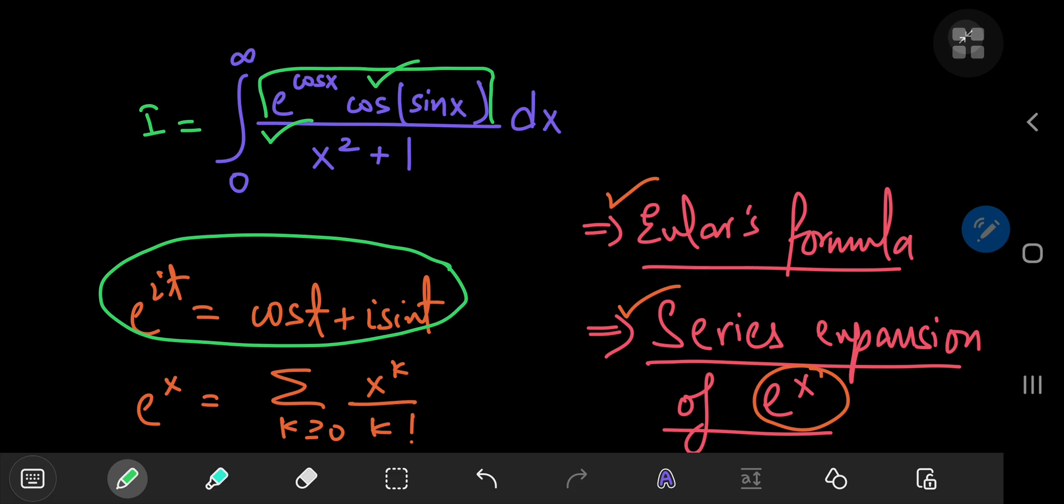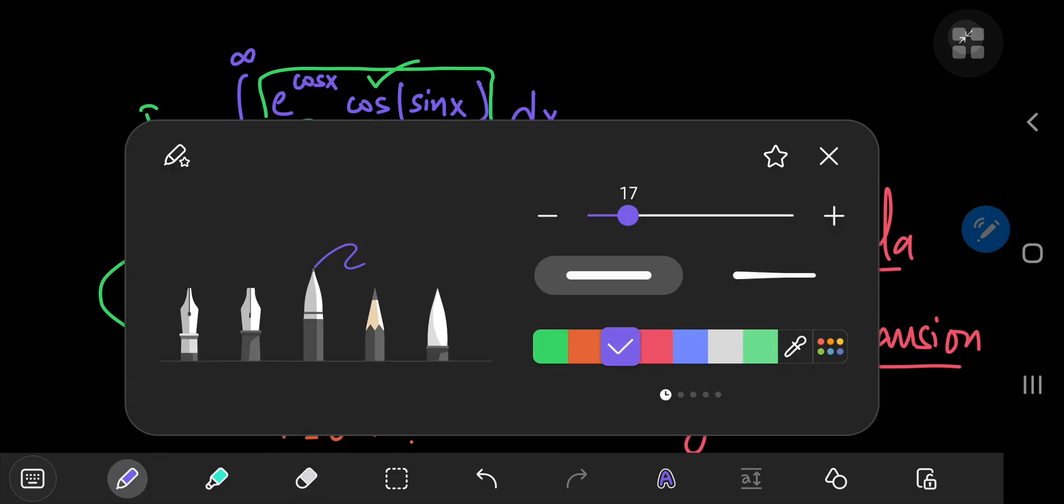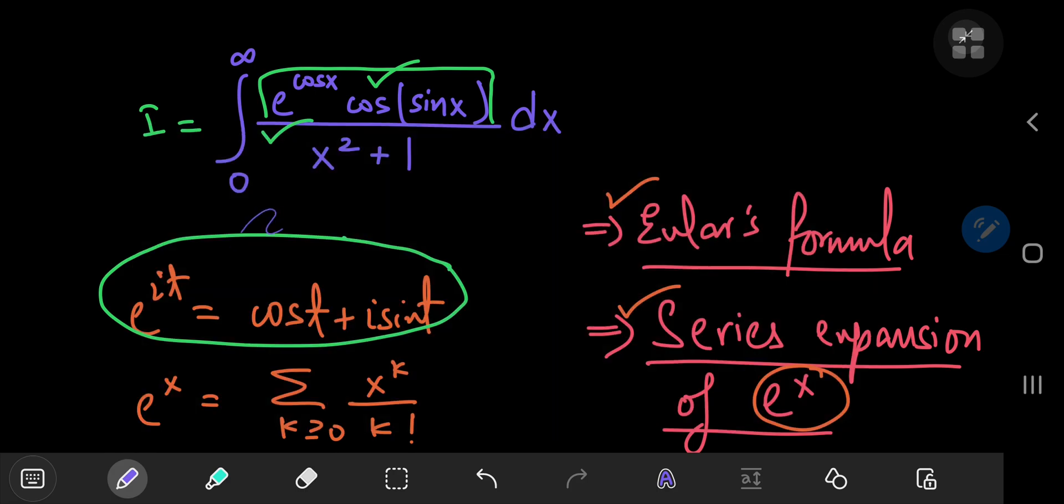All you have to do is use Euler's formula. So in this case, because I have this cosine of the sine of x term, this means that I should use e to the i times sine of x, and this cosine term here is the real part of this exponential term.